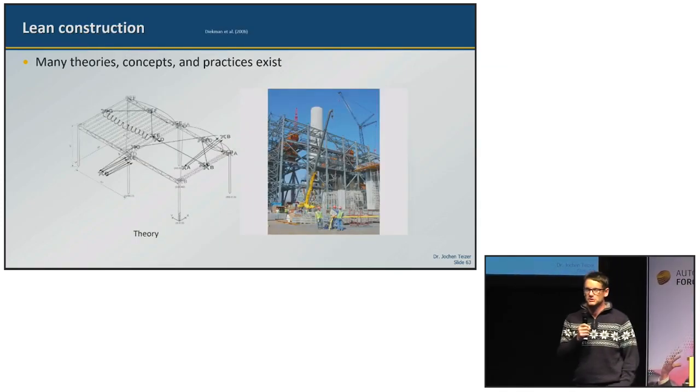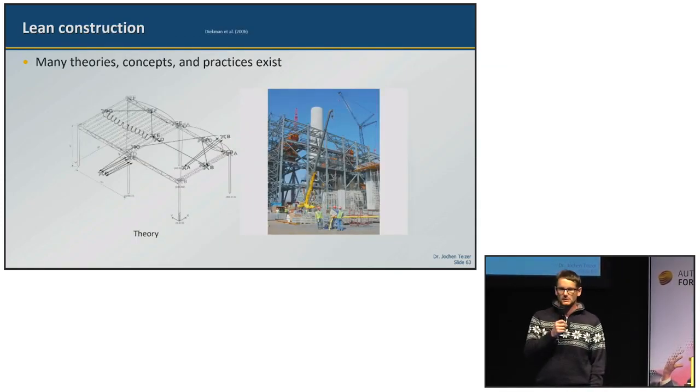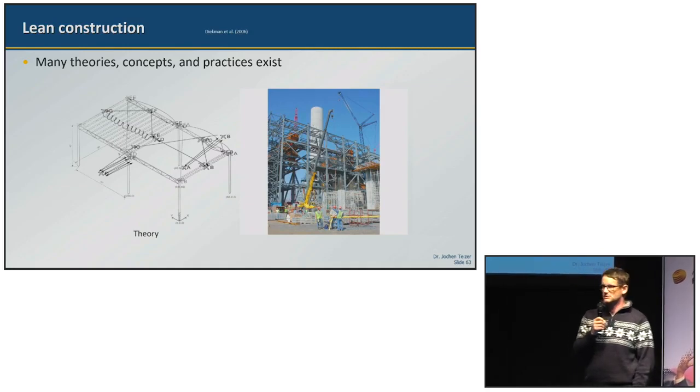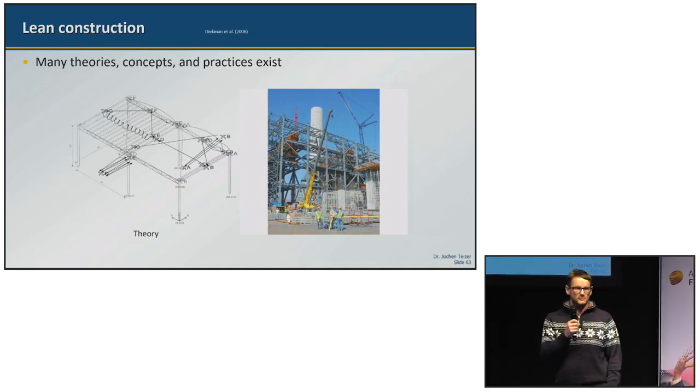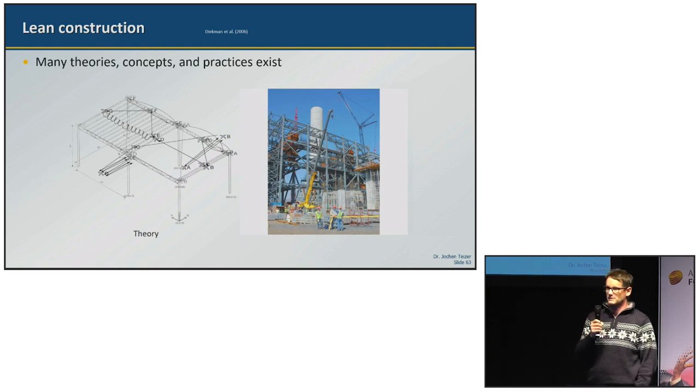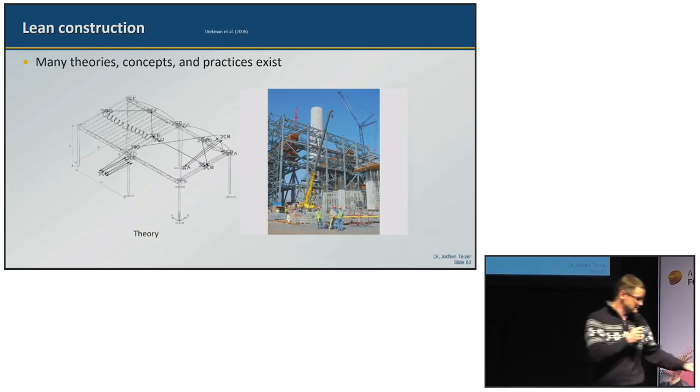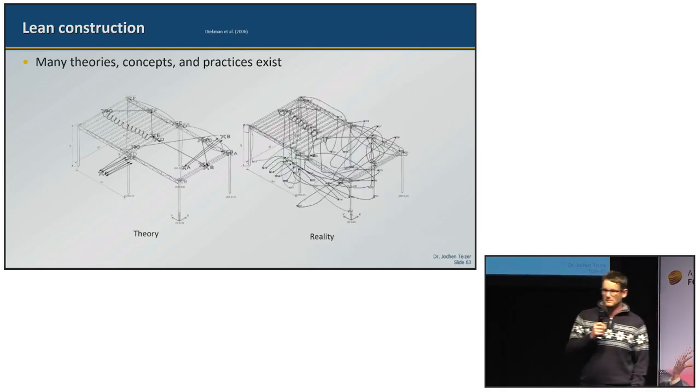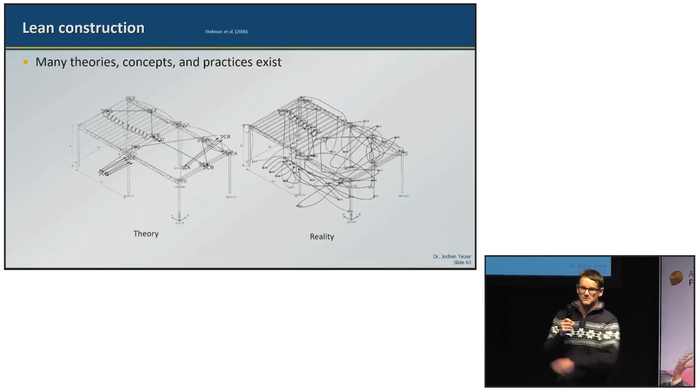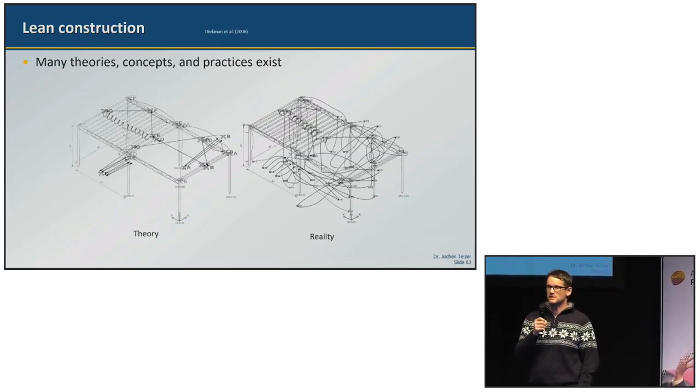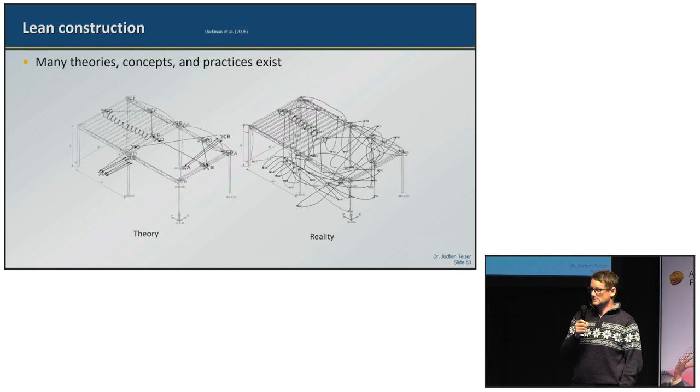Now here is the lean construction approach. In theory, assembling steel or steel gears should look like that. On the right you see an image where we typically conduct our research - capital facility projects where a lot of money is invested. But in reality it looks like spaghetti. People high up in the air traverse and expose themselves to falls, so it's very hard to control.